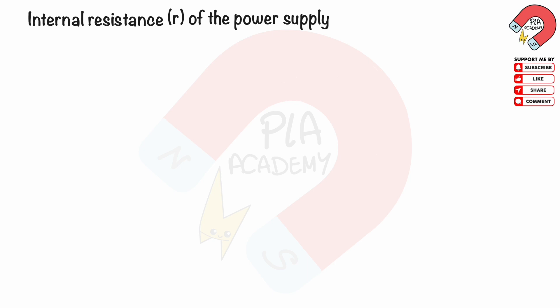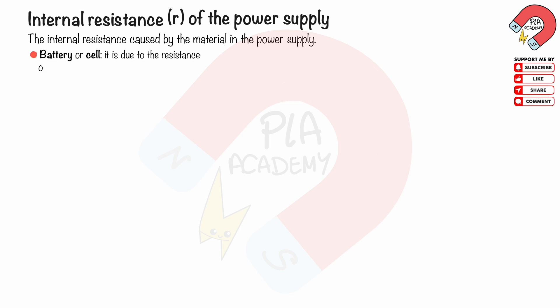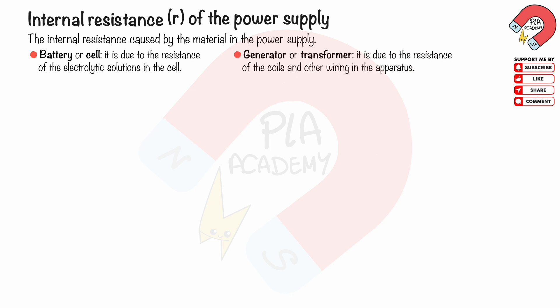The internal resistance of the power supply. Internal resistance is caused by the material in the power supply. For example, in a battery or cell, the internal resistance is due to the resistance of the electrolytic solution in the cell. In a generator or transformer, the internal resistance is due to the resistance of the coils and other wiring in the apparatus. The internal resistance is what makes batteries and cells warm up when they are used.